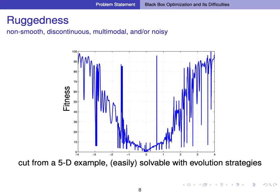The next difficulty is the ruggedness of the objective function. Ruggedness is caused by discontinuity, modality, or noise in the objective function. On such problems, local information of the objective function such as the gradient is often not useful. To tackle ruggedness, one may need to gather more global information. For this purpose, evolution strategies and many other evolutionary approaches use multiple solutions spread over the search space.